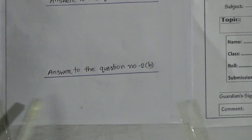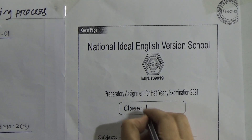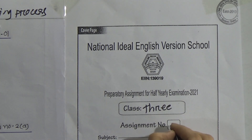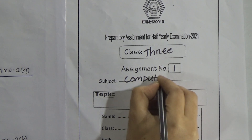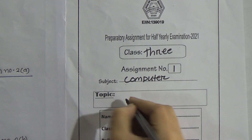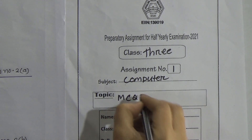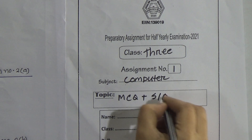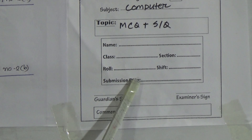Answer to question number 2A and answer to question number 2B. Complete your assignment. Here is the cover page of the assignment — you know how to complete it. Class 3, assignment number 1, subject: Computer. Topic: assignment has two topics — MCQ plus short question. You know: name, class, section, roll, shift, and submission date. Assignment submission date: 6th May, on Thursday.